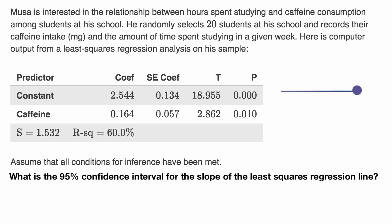Let's visualize the regression. So our horizontal axis, or our x-axis, that would be our caffeine intake in milligrams. And then our y-axis, or our vertical axis, that would be the time studying, I would assume it's in hours.